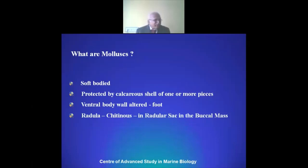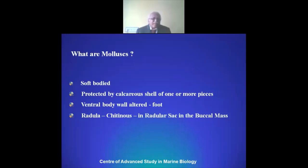If you see the group Mollusca, they are the second largest group of animals in the animal kingdom, next to the phylum Arthropoda. The occurrence of molluscs on Earth dates back to 66 million years ago, when the dinosaurs disappeared and the mammals started emerging. The relationship between mangrove plants and molluscs is very much coinciding, in the sense that on the appearance of mangrove plants, molluscan genera also appeared along with them.